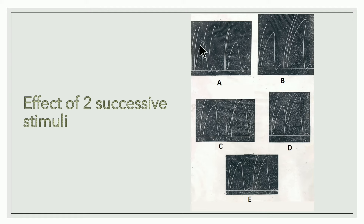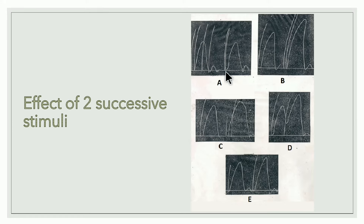Graph A: the first stimulus gives a simple muscle curve. The latent period can be divided into two halves. When the second stimulus is applied in the first half of the latent period, the height of the curve is the same as with a single stimulus. This indicates the muscle is not responding to the second stimulus — the first half of the latent period is absolutely refractory.